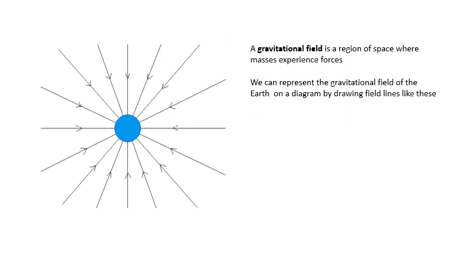Here is the Earth. And surrounding the Earth, we imagine something called a gravitational field. A gravitational field is a region of space where masses experience forces. In A-level physics, you're going to do gravitational fields, electric fields, and magnetic fields. It's a three-dimensional region of space where masses experience forces.